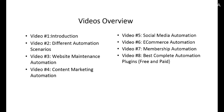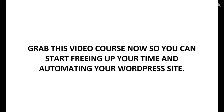Video five will talk about social media automation — how do you take those posts and pages and content and post them automatically on your social media sites? A lot of people have many different social media platforms, and that alone ends up becoming a full-time job. Video six will cover e-commerce automation — if you run an e-commerce site, what elements can you automate? Video seven will cover membership automation. Video eight, the last video, will be about a complete automation plugin. Videos one through seven cover individual plugins for specific areas, whereas video eight focuses on overarching plugins that can automate things to a whole new level.